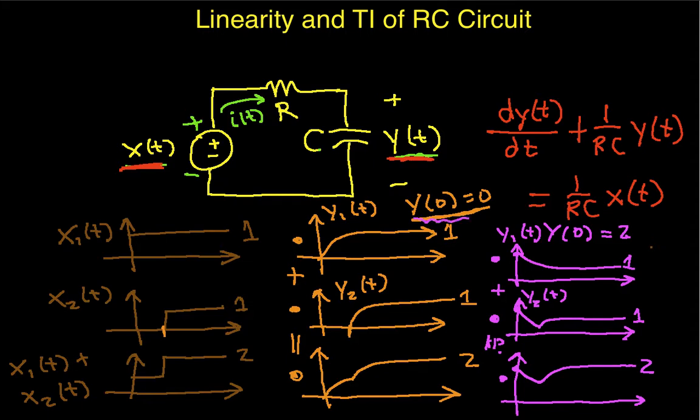Again, when the initial condition is 0, the system does satisfy additivity. So, what we've discovered is that this circuit is nonlinear when y of 0 is equal to 2. And it turns out, for any non-zero initial condition, you have the same thing happening. And it's linear when y of 0 is equal to 0. So, in this case, the initial conditions, if they are 0, it's linear. If they're non-zero, it's nonlinear.